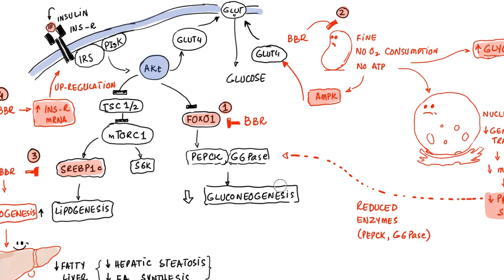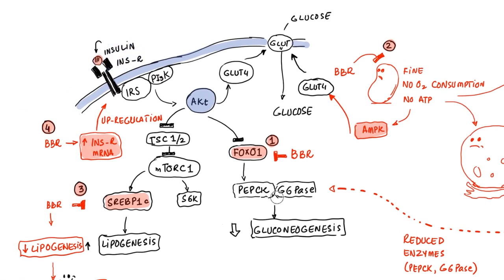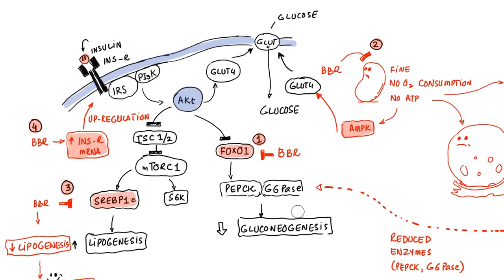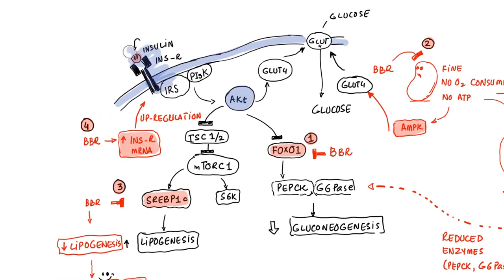Insulin is released when you eat carbohydrates or sugars, so when insulin is high, new glucose doesn't need to be made. The presence of insulin stops gluconeogenesis, while a reduction in insulin causes gluconeogenesis to increase. In diabetics, the presence or absence of insulin doesn't have much control over gluconeogenesis, so it just keeps happening, and as the body keeps making more glucose internally, the patient stays in a hyperglycemic state.